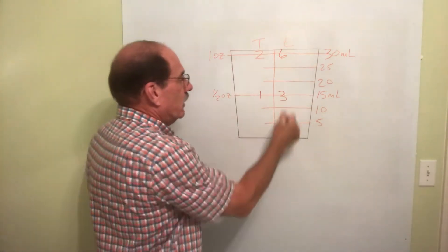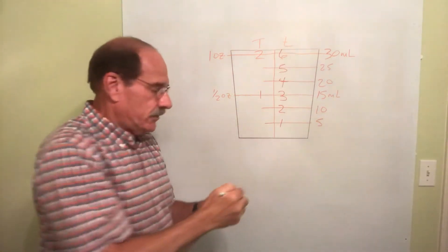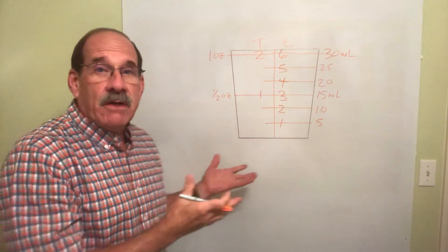Let's now mark these other lines off. That's one. That's two. That's three. That's four. That's five. And there's six. So, there's our medicine cup.